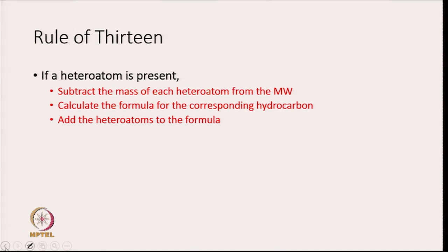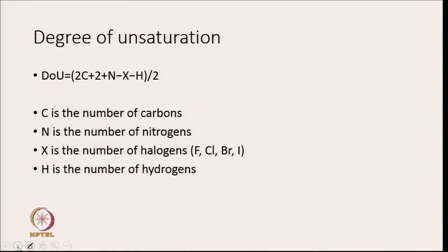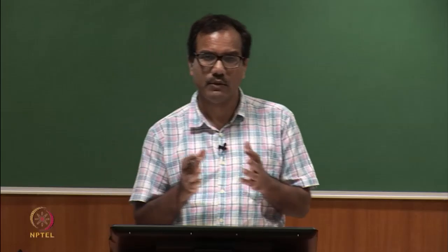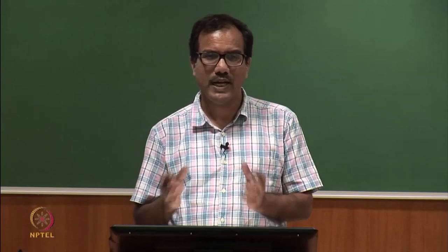Once you apply the Rule of 13 you know the formula. The next step is to get the degree of unsaturation, which is given by the equation: (2C + 2 + N − halogens − H) / 2, where C is the number of carbons, N is the number of nitrogens, halogens include F, Cl, Br, or I, and H is the number of hydrogens. Just by looking at molecular mass you can know the formula, and once you know the formula you can calculate the degree of unsaturation.